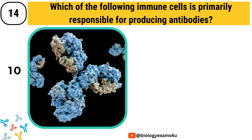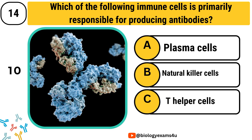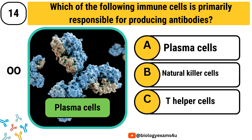Question number 14. Which of the following immune cells is primarily responsible for producing antibodies? Option A, plasma cells. Option B, NK cells. Option C, T-helper cells. The correct answer is plasma cells.